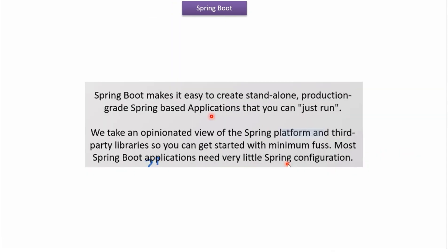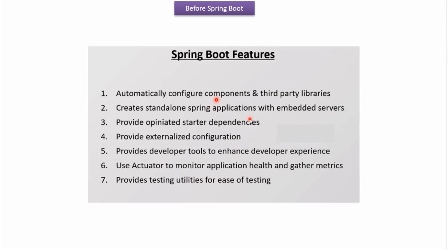Here you can see the advantages of Spring Boot. Spring Boot makes it easy to create standalone, production-grade Spring-based applications that you can just run. It takes an opinionated view of the Spring platform and third-party libraries so you can get started with minimum configuration. Most Spring Boot applications need very little Spring configuration. Spring Boot features include: automatically configuring components and third-party libraries, creating standalone Spring applications with embedded servers, providing opinionated starter dependencies, externalized configuration, developer tools to enhance developer experience, an actuator to monitor application health and gather metrics, and testing utilities for ease of testing.